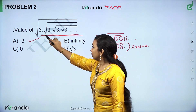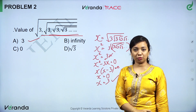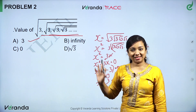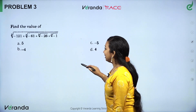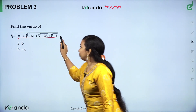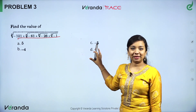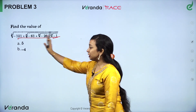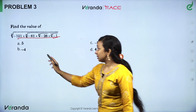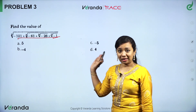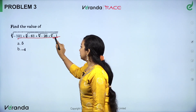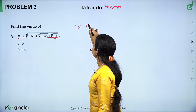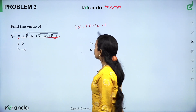For the next sum involving negative cube roots, it is very simple. Minus 1 cubed: minus 1 into minus 1 into minus 1 equals minus 1. So that is the answer for the cube root of minus 1.